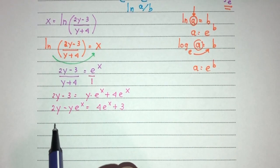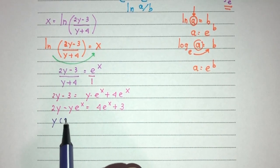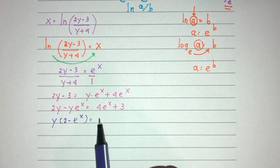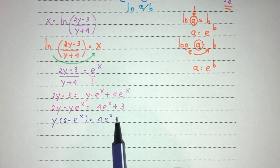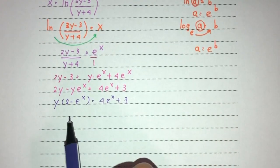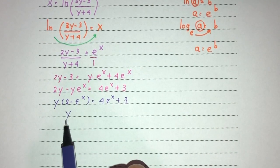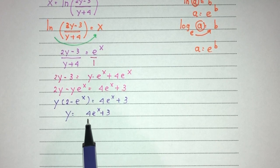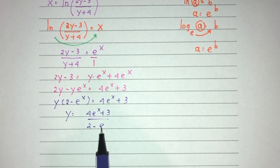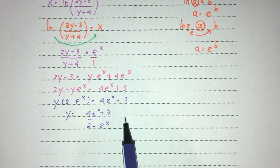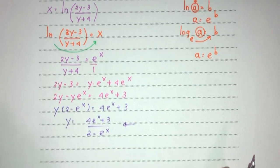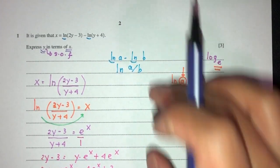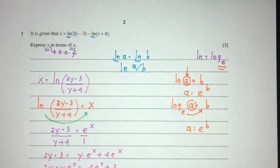Because y is common, factorize y outside: y(2 minus e^x) equals 4e^x plus 3. So finally, y equals (4e^x plus 3) divided by (2 minus e^x). And this is your answer for question part 1 — finding y in terms of x.